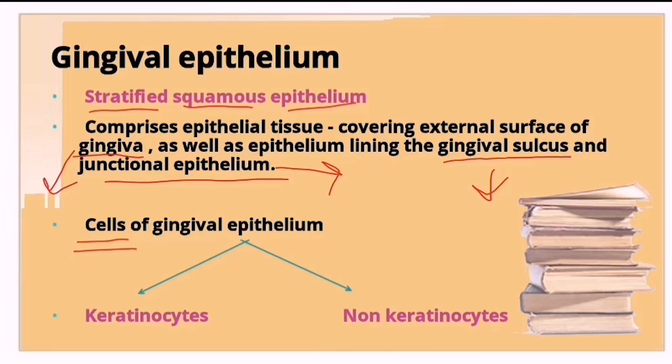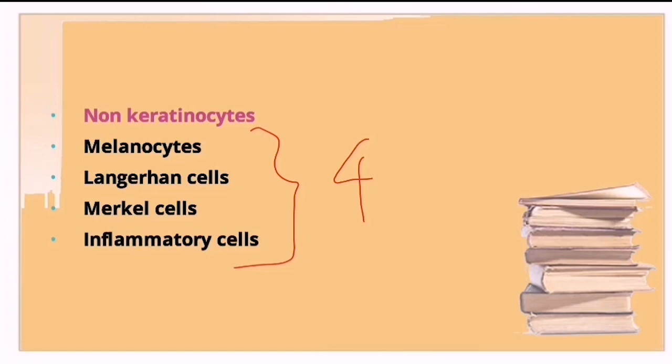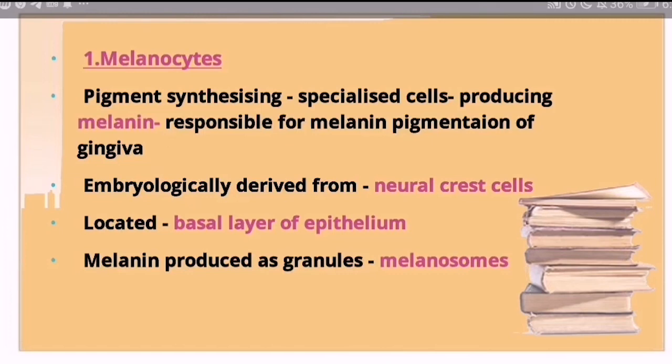The cells of gingival epithelium are divided into two types: keratinocytes and non-keratinocytes. The non-keratinocytes are further divided into four types: melanocytes, Langerhans cells, Merkel cells, and inflammatory cells.